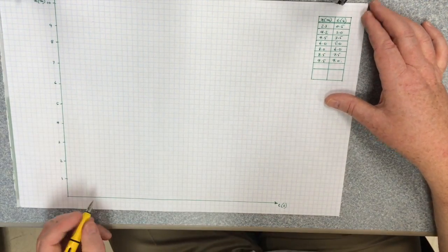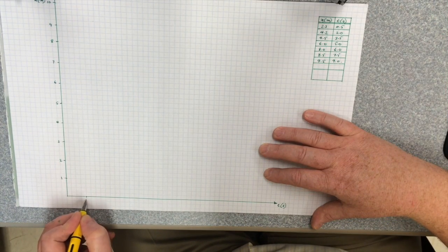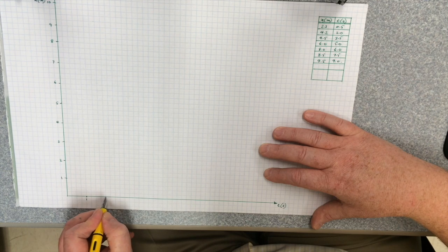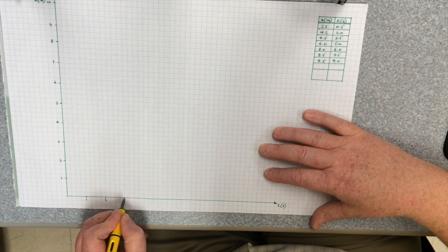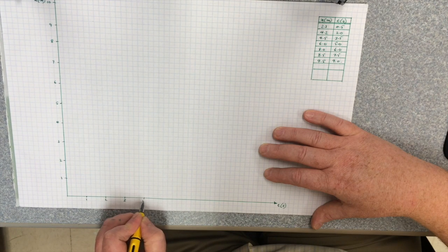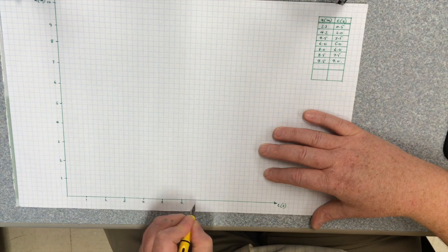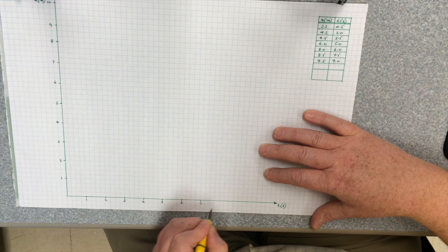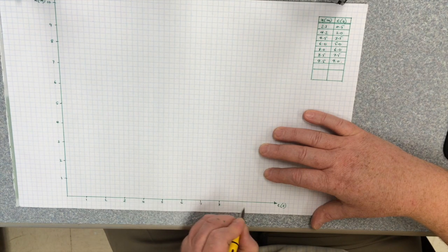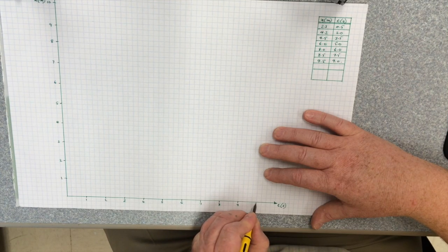I can do the same thing over here. I can keep the same scale. And I'll do the same thing. Again, 1, 2, 3, 4, 5, 6, 7, 8, 9, and 10.